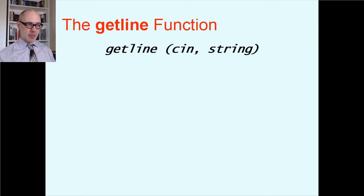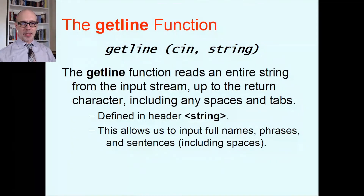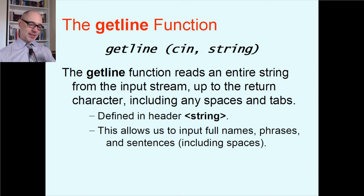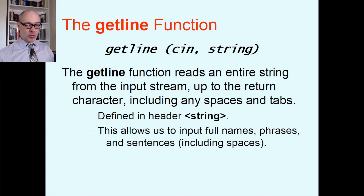Here's a function to do that: it's called the getline function. The name of the function is getline. It takes two parameters: the cin object itself and the name of a string variable where the string will be stored. The getline function reads an entire string from the input stream, including all the spaces, tabs, and other whitespace up to the return character. This function is defined in the library string header — fortunately included in iostream in our compiler. This allows us to input full names with spaces, phrases, sentences, and names of cities that have spaces.